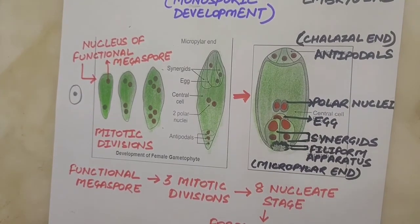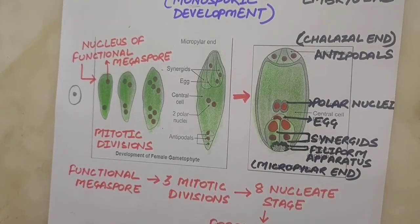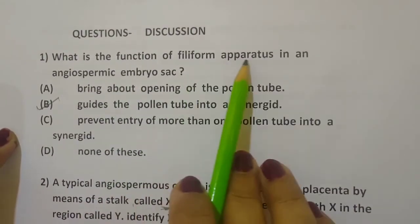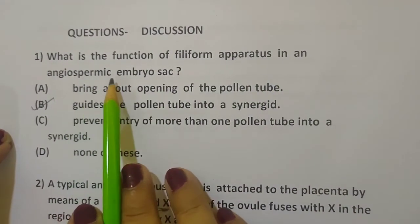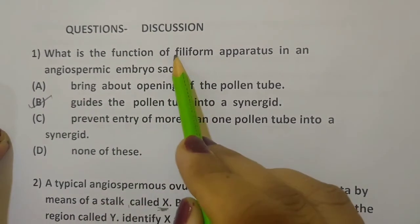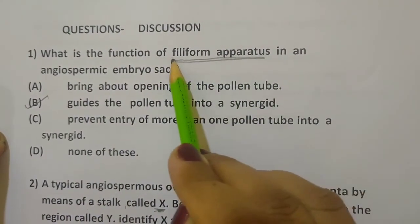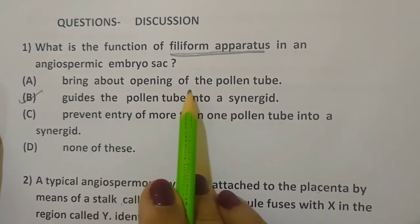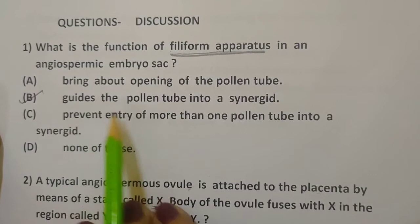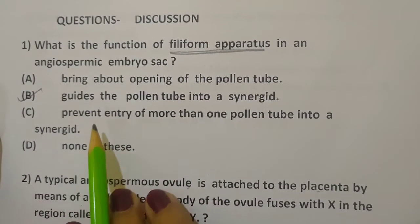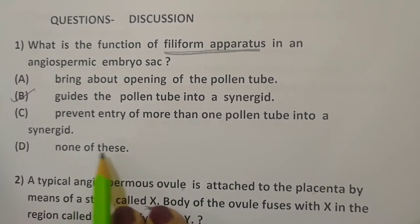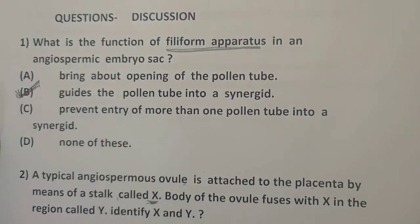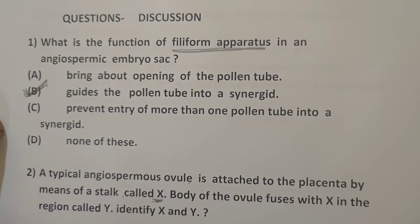The first question is: What is the function of the filiform apparatus in an angiospermic embryo sac? We know that the filiform apparatus guides the pollen tube. The options are: bring about opening of the pollen tube; guides the pollen tube into the synergids; prevent entry of more than one pollen tube; and none of these. The correct answer is: guides the pollen tube into the synergids.